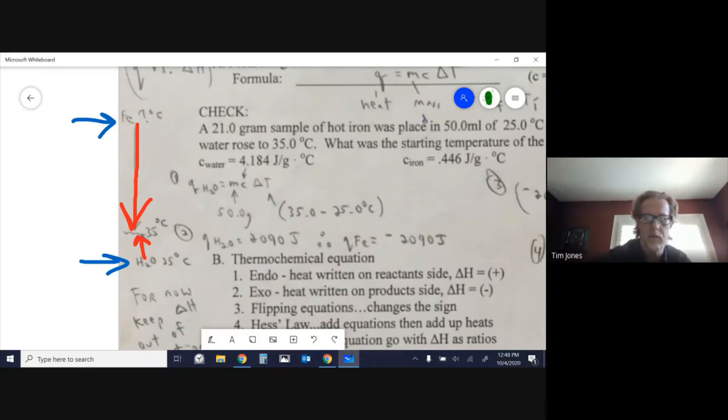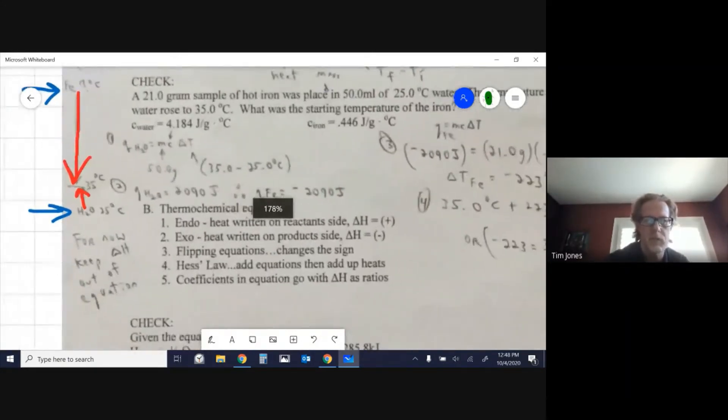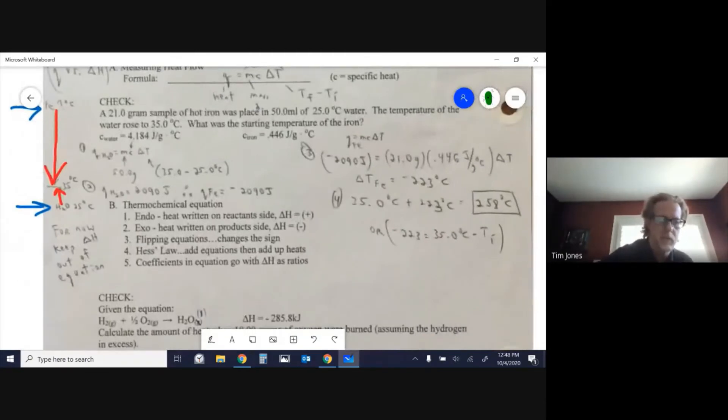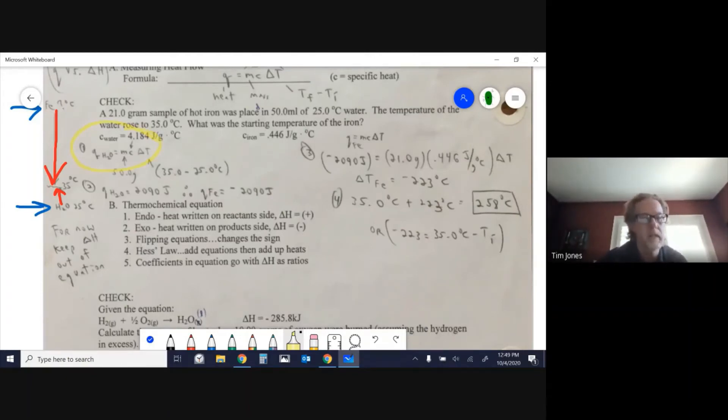In the calculation, the first thing I do is use q equals mc delta t to solve for how much heat went into the water. Notice that's a positive value: 2090 joules. We then assume that heat came from the iron, so the amount of heat that left the iron is negative 2090 joules.